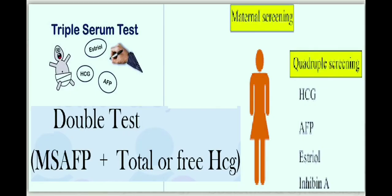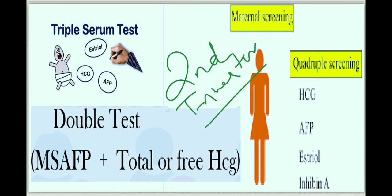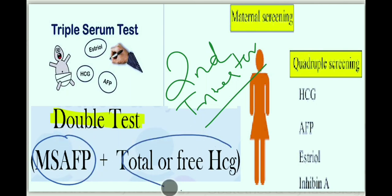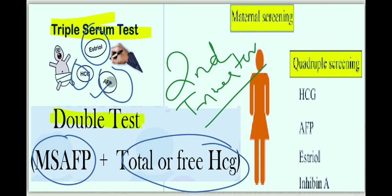The second trimester screening is done at 15 to 20 weeks of gestation and includes the double test, triple test, and quadruple test. Double testing includes maternal serum alpha-fetoprotein and free HCG. Triple test includes three parameters — maternal serum alpha-fetoprotein, HCG, and unconjugated estriol. If we add inhibin to the triple test parameters, we get the quadruple test, which includes maternal serum alpha-fetoprotein, HCG, unconjugated estriol, and inhibin.